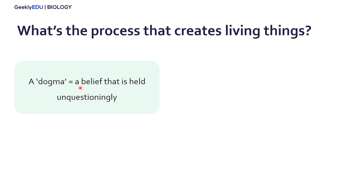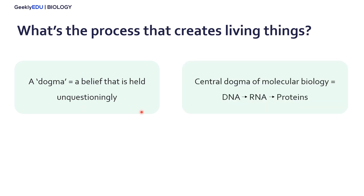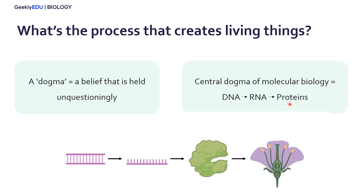A dogma is defined as a belief that is held unquestioningly. So this is basically a theory in biology that almost everyone agrees with. When we're talking about the central dogma of molecular biology, what we are referring to is that DNA creates RNA, which creates proteins. And so essentially, this is the process that creates life.